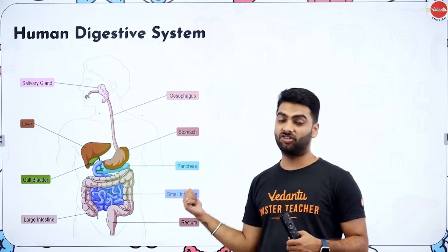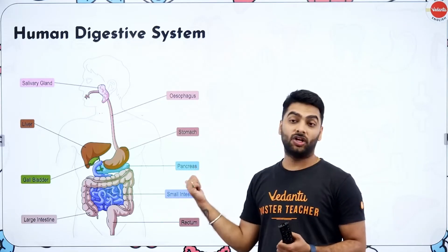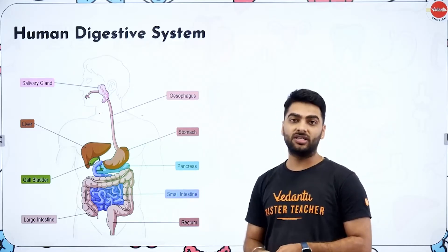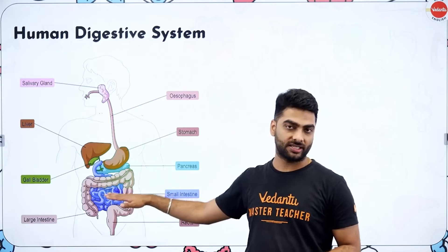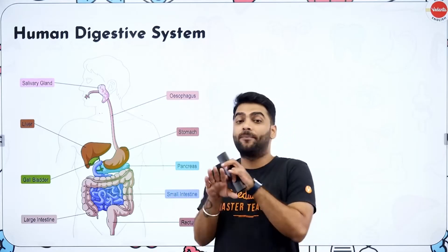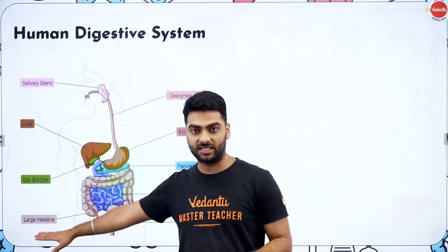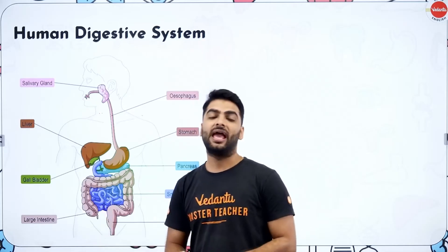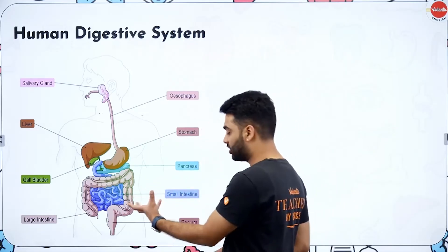The pancreas secretes three enzymes: pancreatic amylase (breaks down carbohydrates), trypsin (converts peptones into peptides), and lipase (converts emulsified fats into fatty acids and glycerol). Food moves to the lower small intestine where intestinal juices complete digestion. Finger-like projections called villi absorb nutrients, and undigested food passes to the large intestine — through the ascending colon, transverse colon, and descending colon — where water and salts are absorbed. Waste is stored in the rectum and removed through the anus.